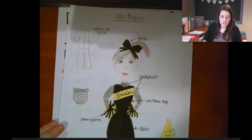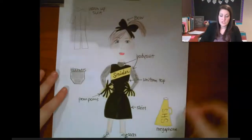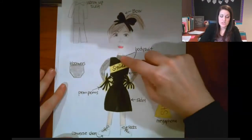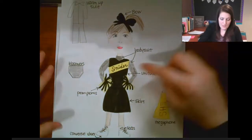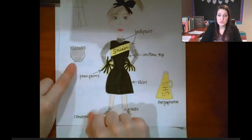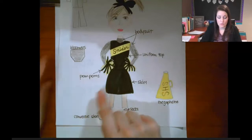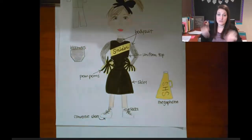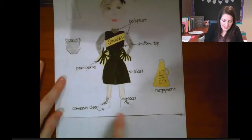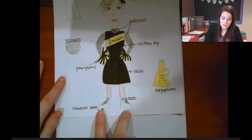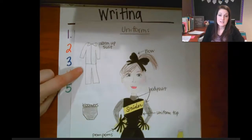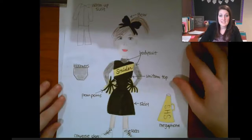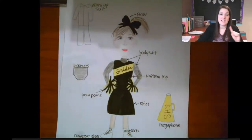For cheerleading, I did a labeled diagram showing what you would need for your uniform: a bow, a bodysuit underneath so your neck and arms were covered, the uniform top, the skirt, pom-poms, bloomers under the skirt so nobody would see your underwear during kicks, a megaphone, cheerleading socks, Converse shoes, and a warm-up suit. I took a lot of time on my drawing and labels. You can include a diagram if it makes sense to your topic.